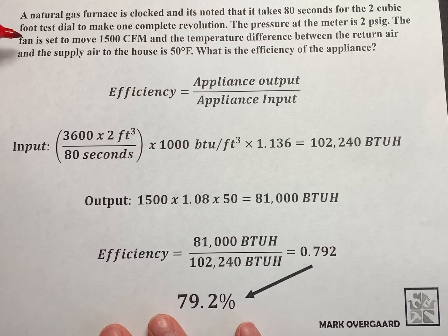The fan is set to move 1500 cubic feet per minute and the temperature difference between the return air and the supply air to the house is 50 degrees Fahrenheit. What is the efficiency of the appliance?